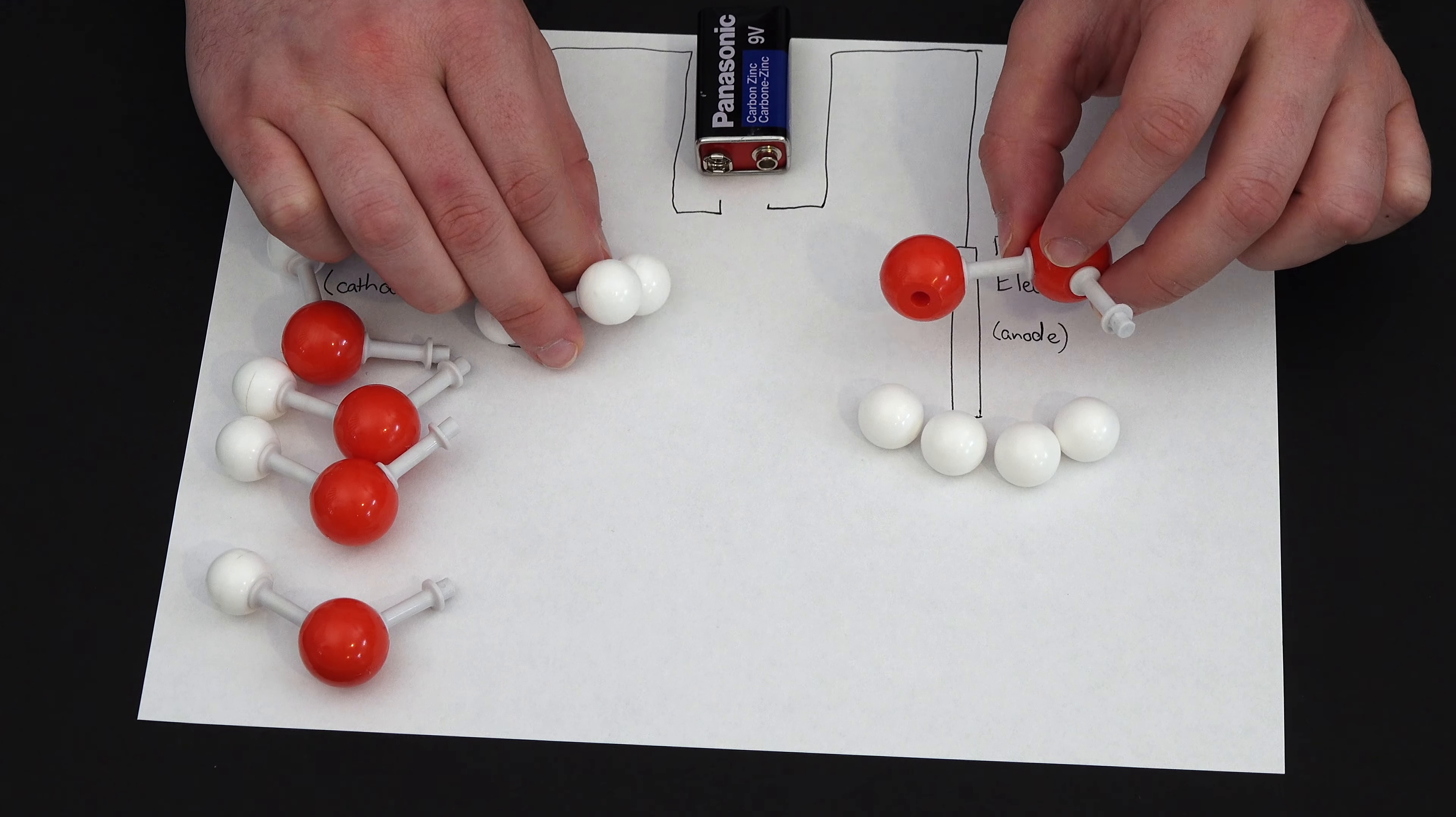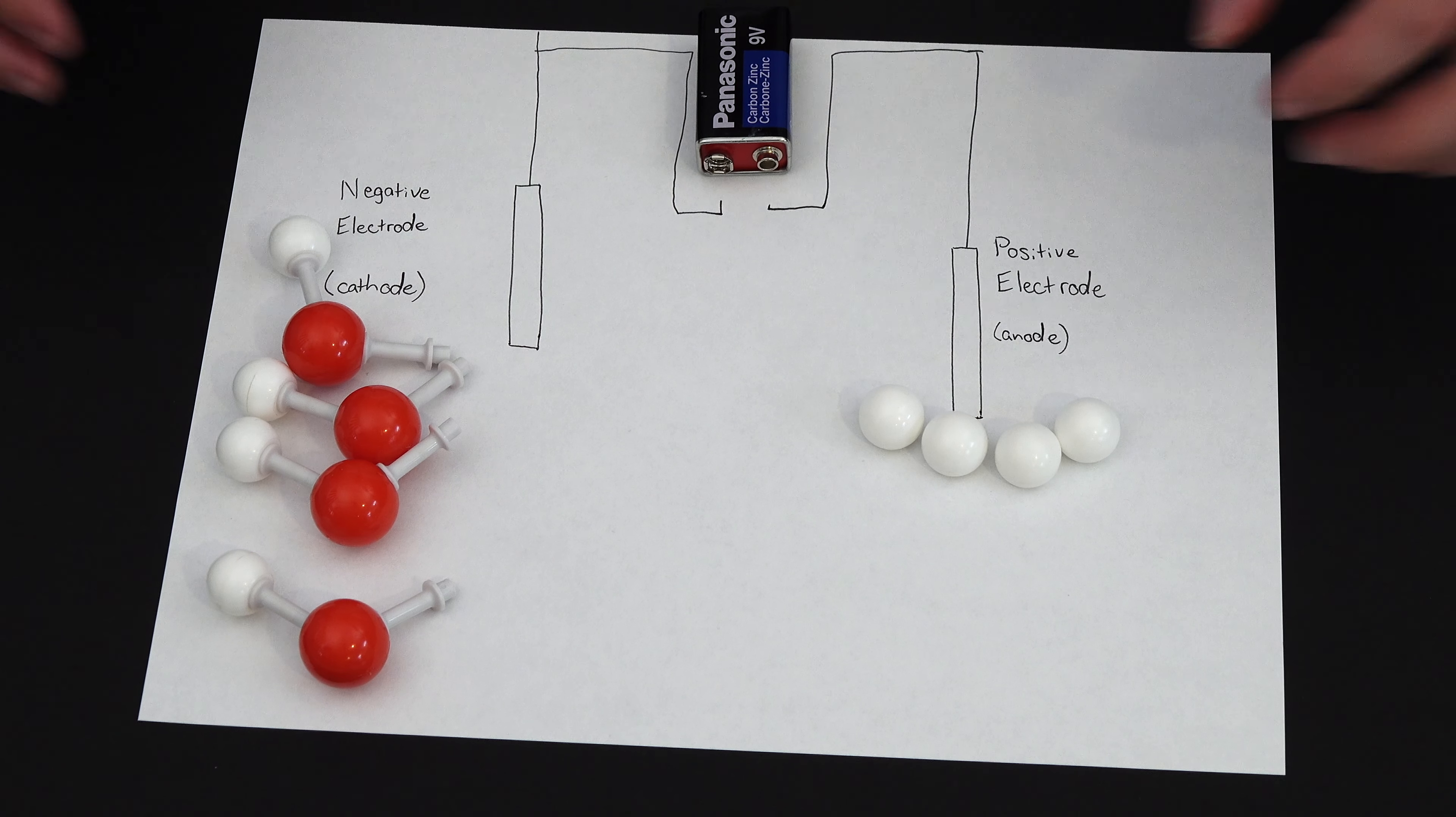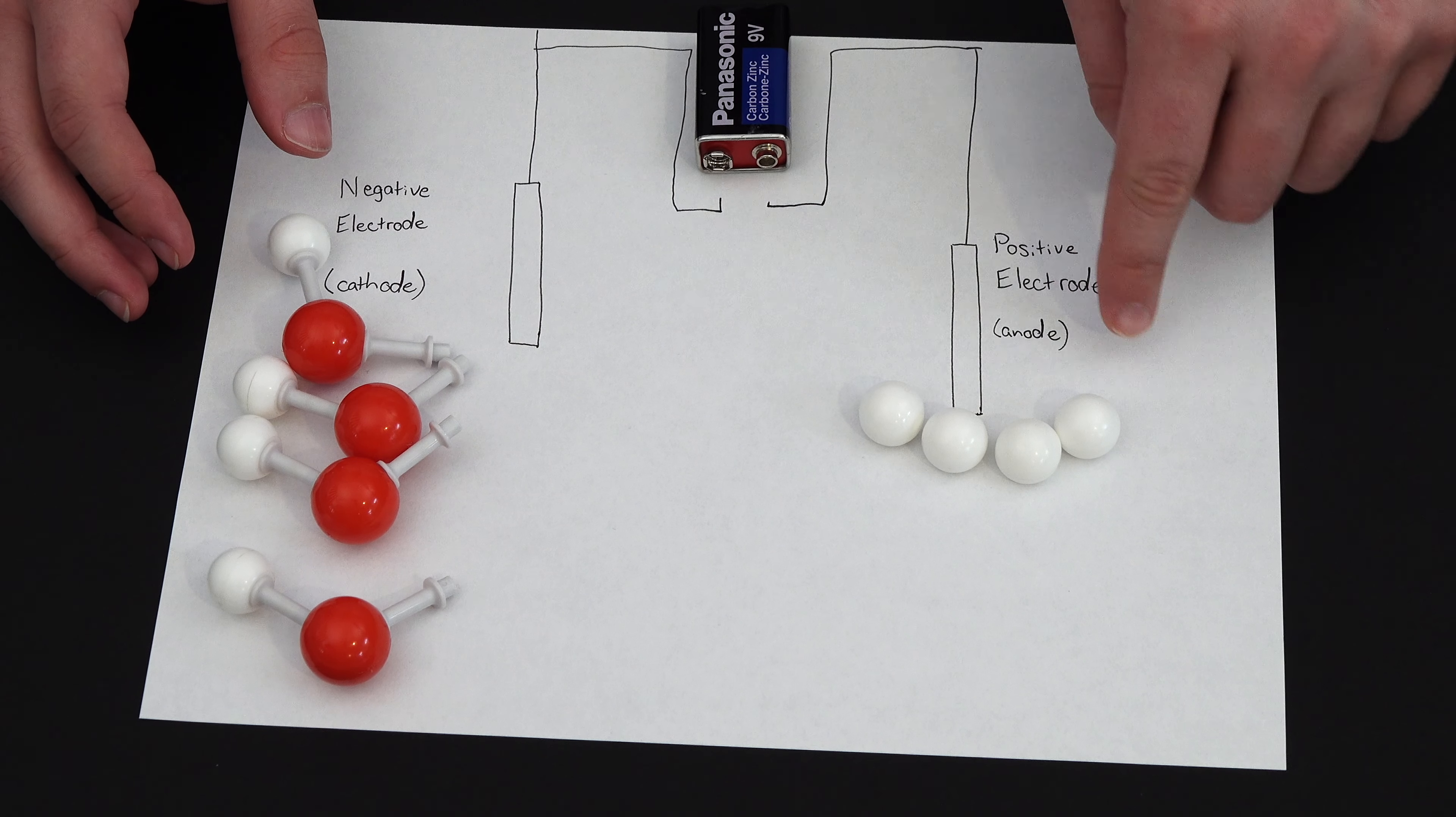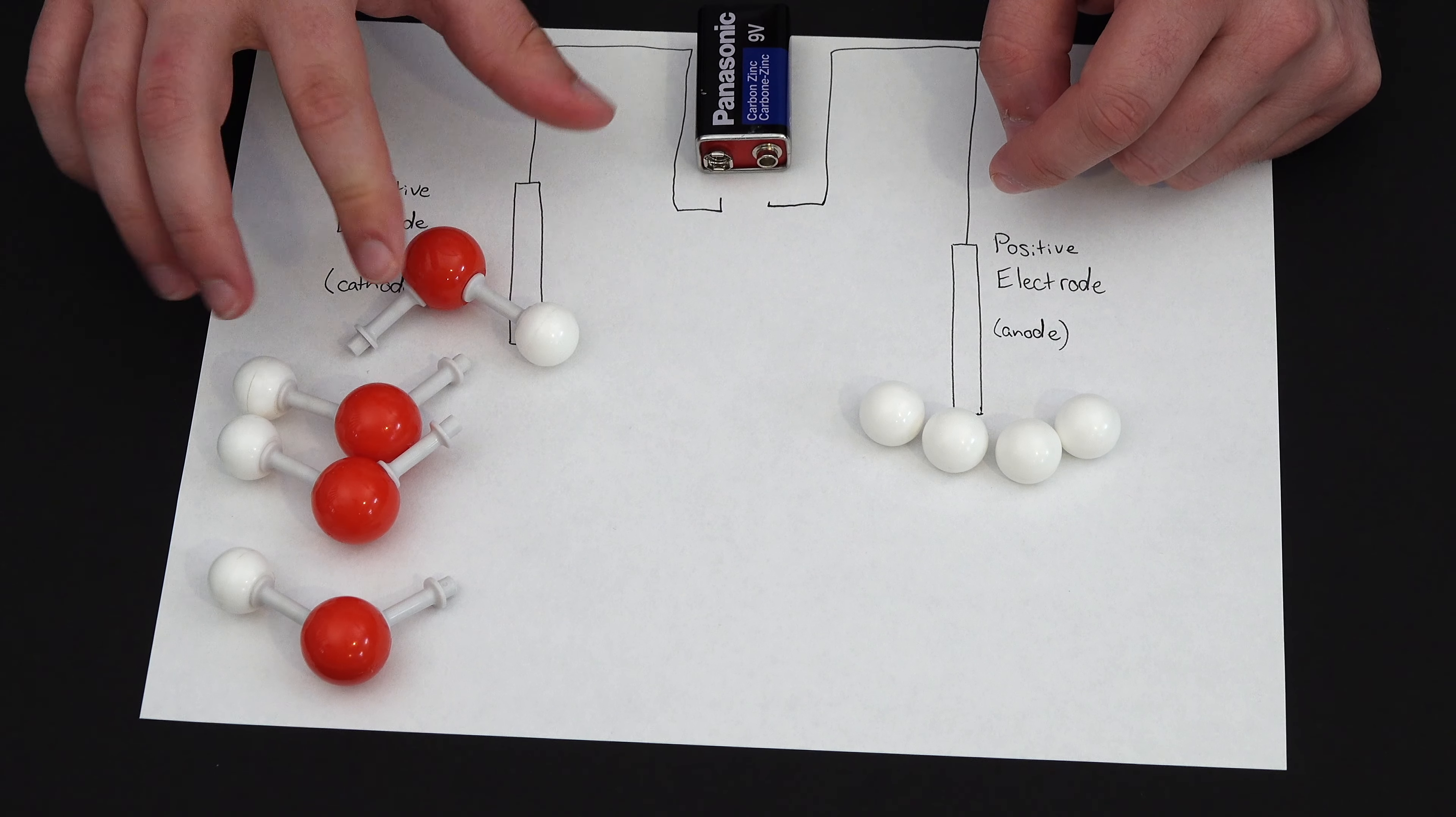So that is the correct ratio that we should be seeing, and these two just kind of bubble out of solution. So at this point, we now have a positive terminal surrounded by positive ions, and we have a negative terminal surrounded by these negative hydroxide ions.